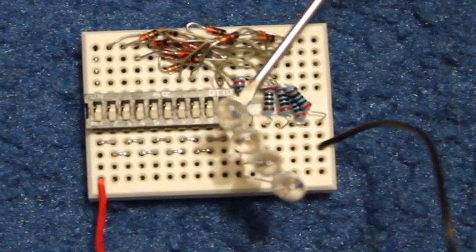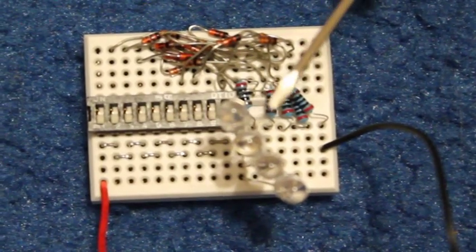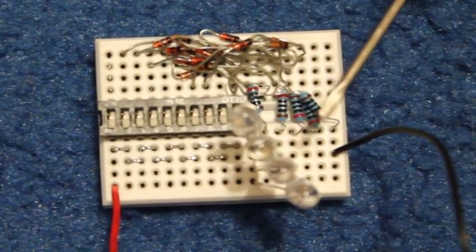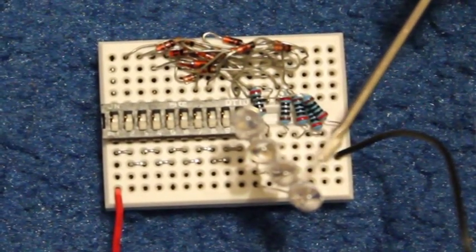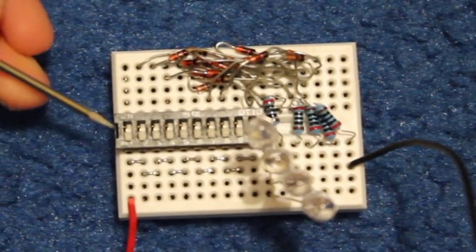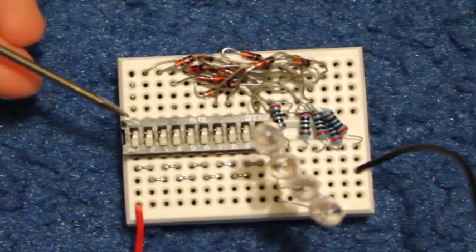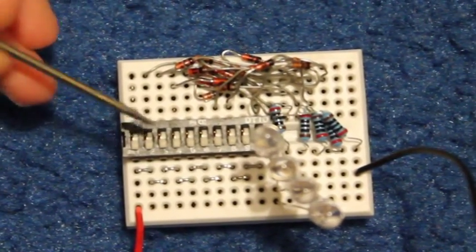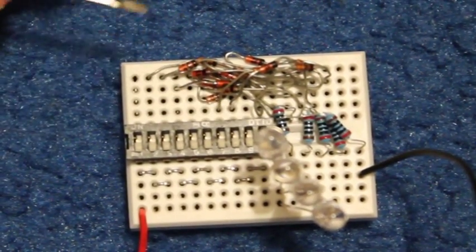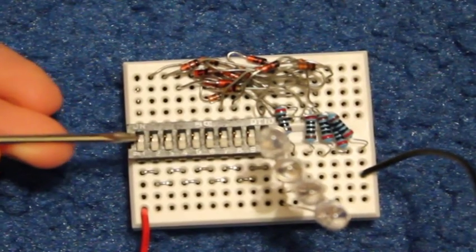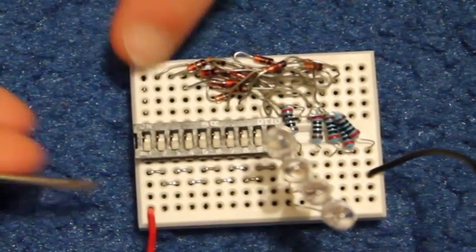This LED outputs 1 in binary, this 2, this 4, and this 8. This switch has an input of 0, and respectively this is 9. So if I flip this switch, none of the LEDs should glow.